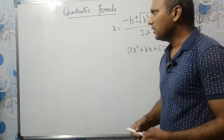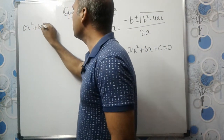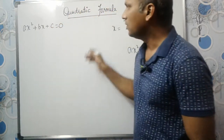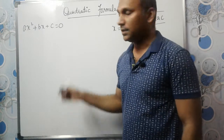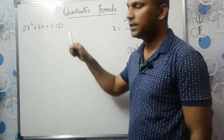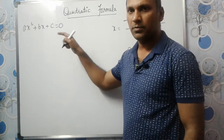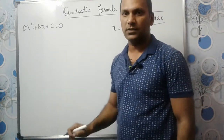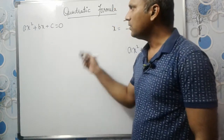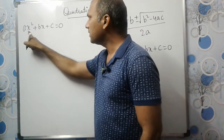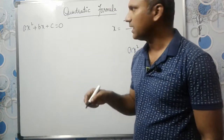We will derive this. We have ax squared plus bx plus c is equal to 0. What we do here is apply the completing square method. In the last video we studied what completing square method is. If you did not watch that video, I recommend you go watch it first.